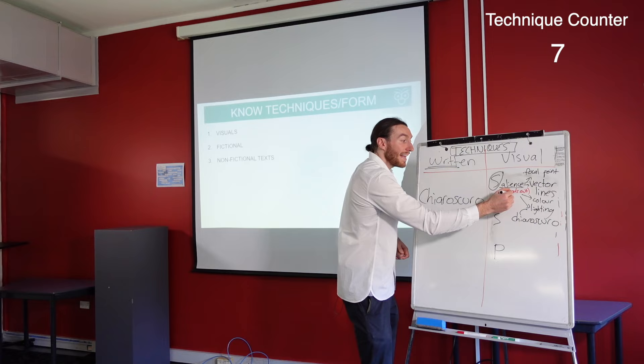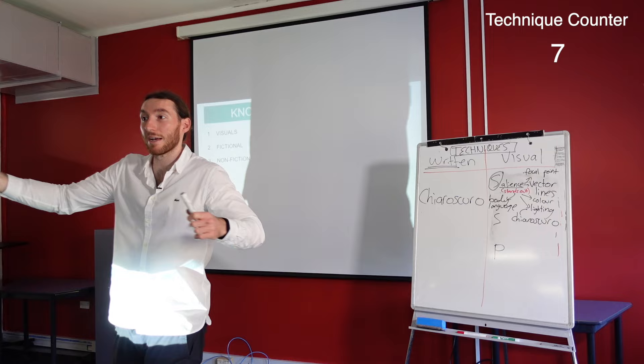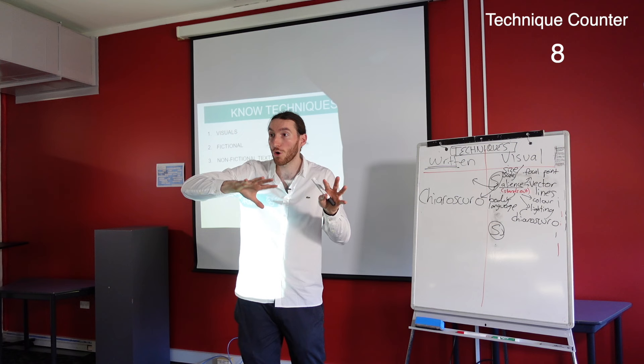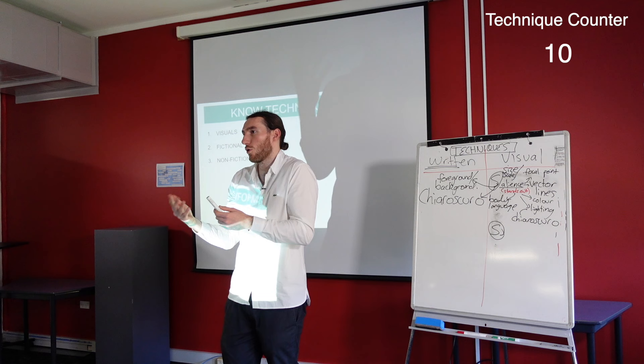Body language could potentially make something salient — if someone has really expressive body language, maybe that's making them pop out. Size and scale goes to the composition — how the image is put together. Often you see something at the front and the back of the image. What do we call those? Foreground and background. One of those things makes it salient. Then tell me the effect or significance of it using a key term from the question.